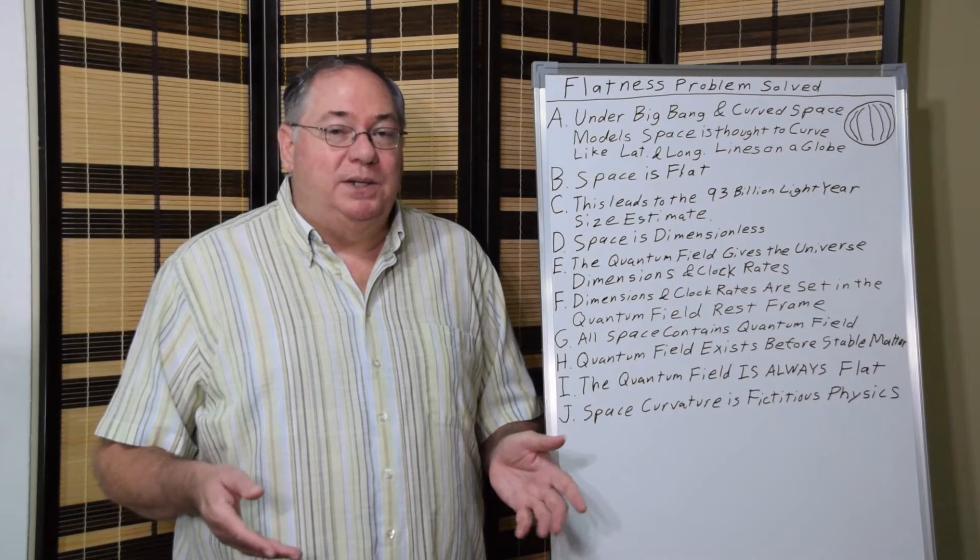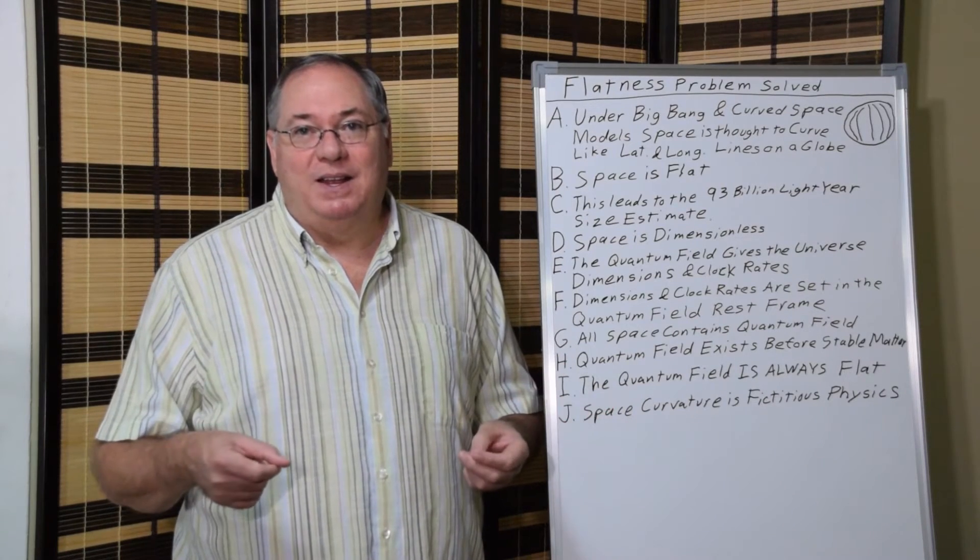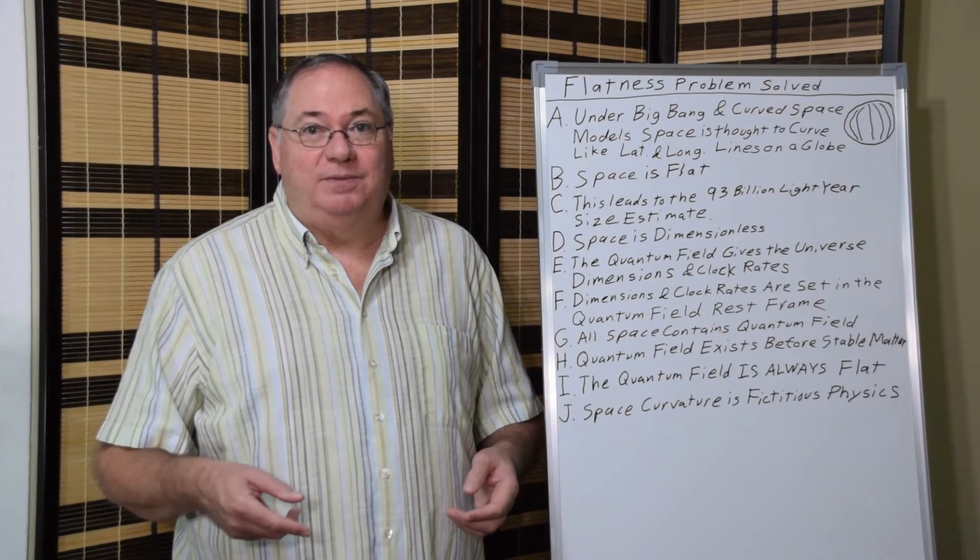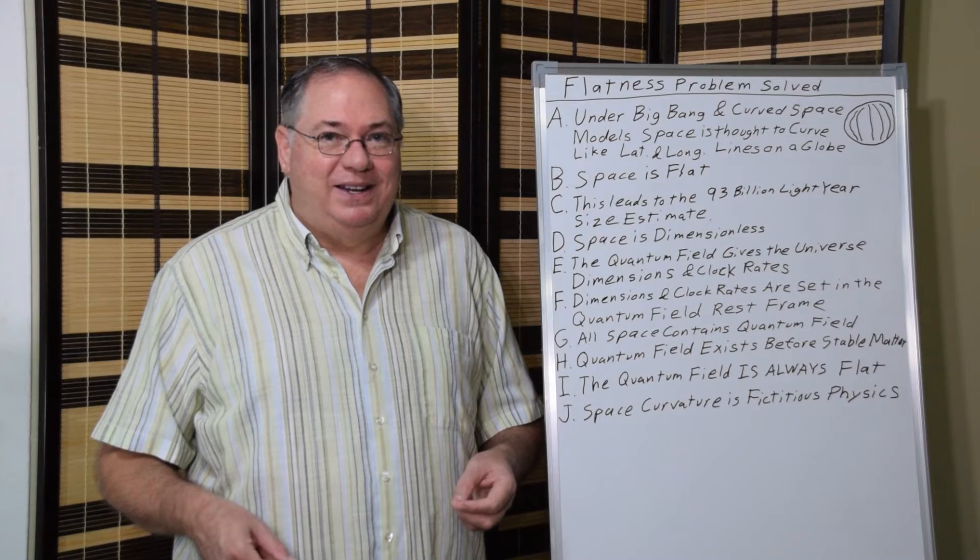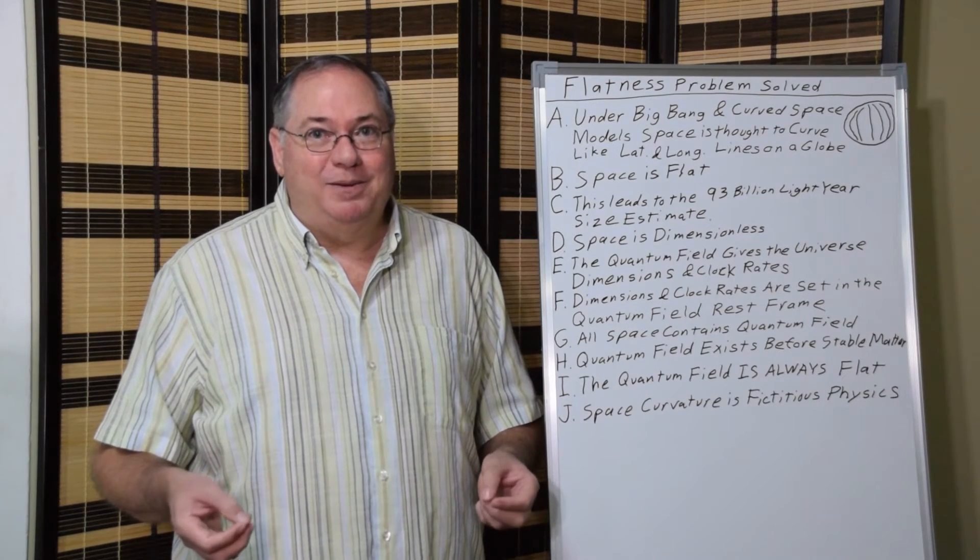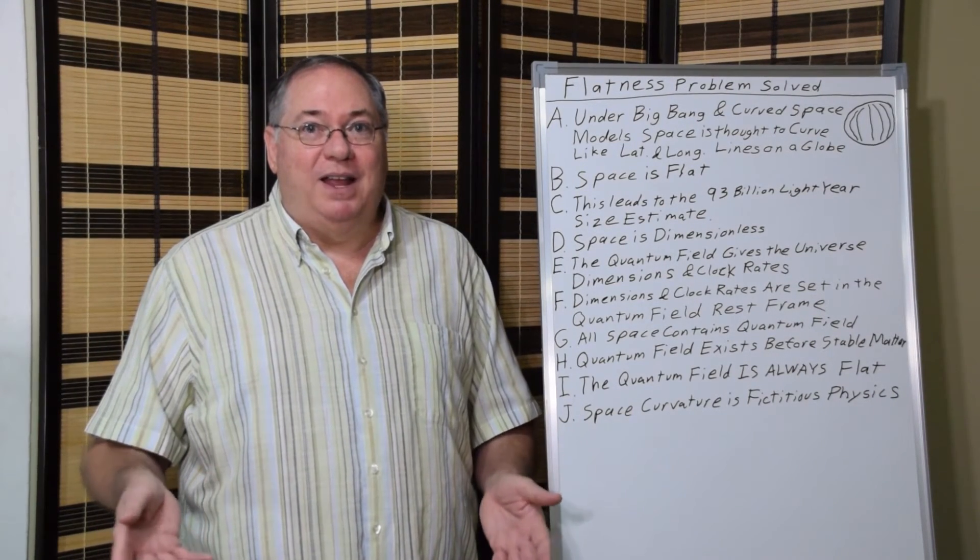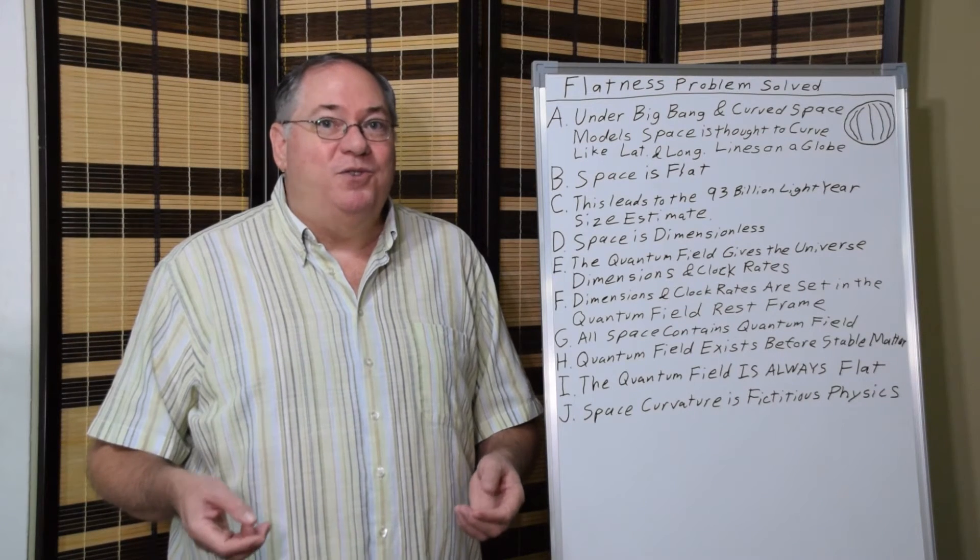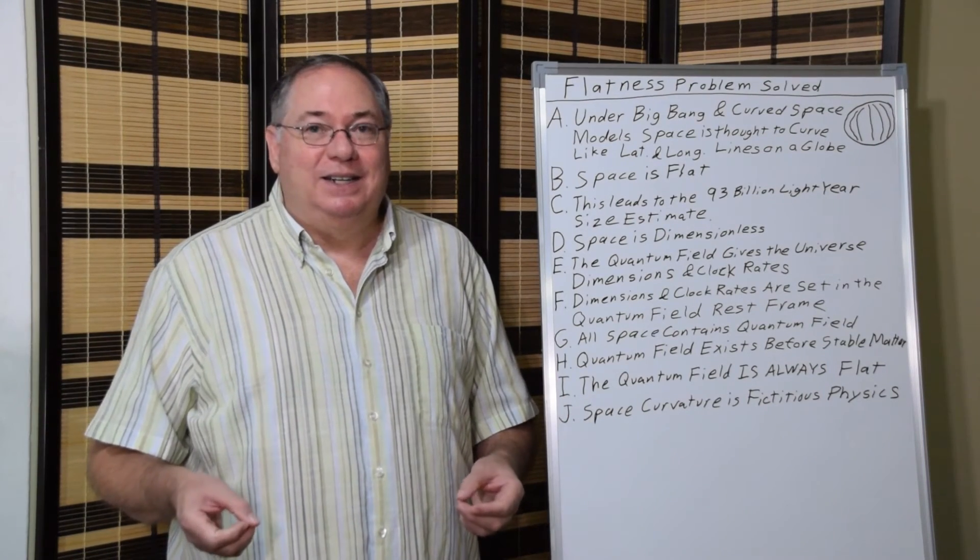We have a choice. But the way to get rid of the flatness problem is you reject this space curvature model. Space doesn't have dimensions by itself. Space can't curve by itself. The idea of space curvature is fictitious physics. There is no flatness problem. There never was. There's a Big Bang theory problem. The Big Bang theory problem is what's wrong. And physicists should have realized that. You have a measurement that says the universe is flat. The universe is flat. Accept it. Move on. Adapt your theories to flatness. Don't try to pretend that this space isn't flat when we know it is. A real physicist has to go with the real evidence.